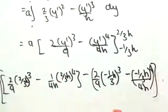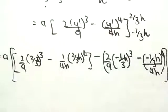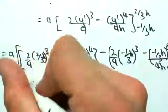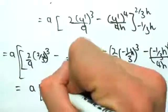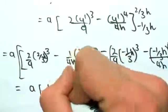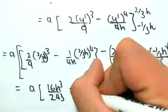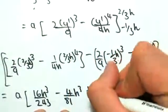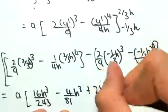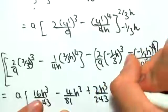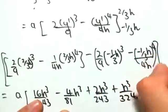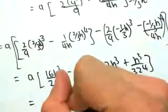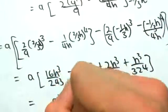Okay, so this would be what we would have. If we were to simplify all this, we would have a outside of 16h cubed on 243, minus 4 on 81h cubed, plus 2h cubed on 243, plus h cubed on 324, and this would all equal ah cubed on 36.